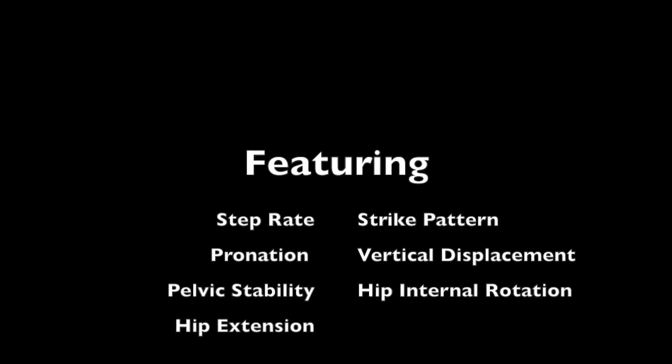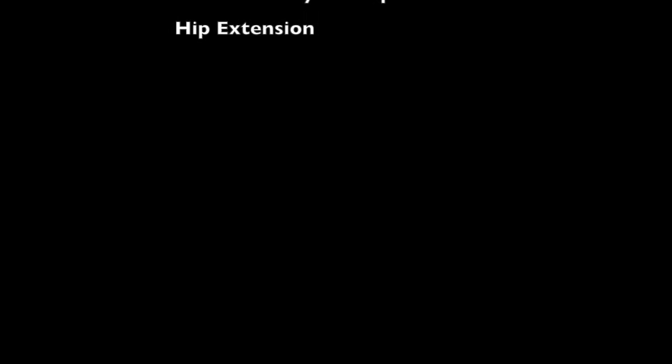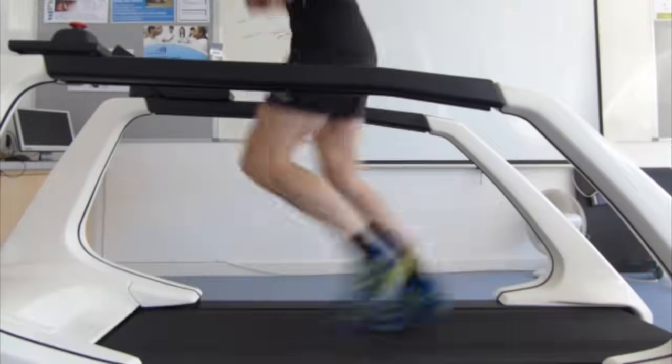This gait analysis video will look at seven factors that commonly affect running form. Firstly, we'll look at step rate and how many steps the runner takes per minute.